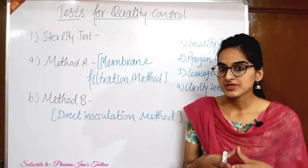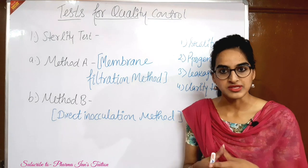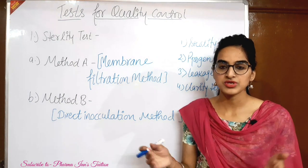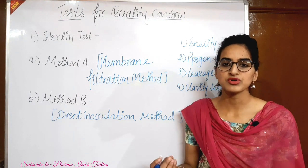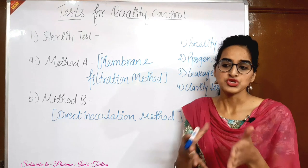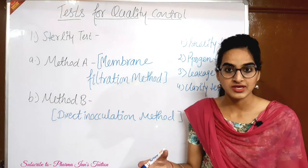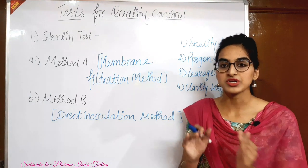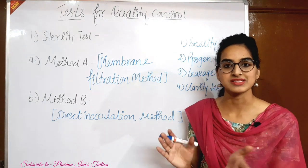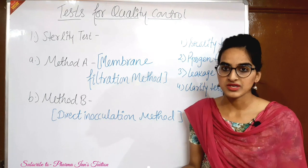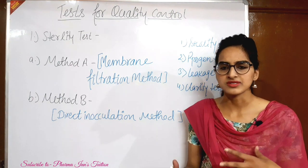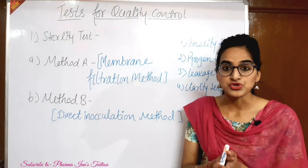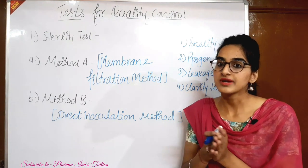When we talk about parenteral preparations, which we give in the form of injection, sterility is very important because they go directly to our blood. So when we manufacture them, our manufacturing area is very clean. When manufacturing or sampling, we always use a room as an aseptic area. We use laminar air flow and other controls to maintain the sterility of the room, so what we make is a sterile preparation.